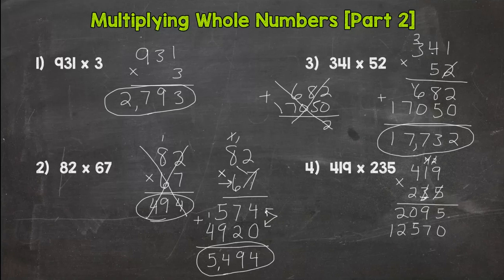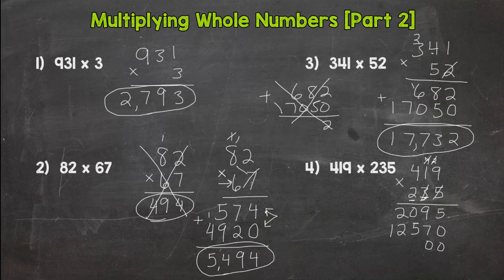Done, done. Now our next step, don't forget we have this 2 here and that 2's value is 200, so we need 2 placeholder zeros.